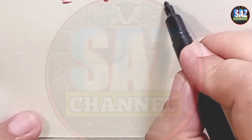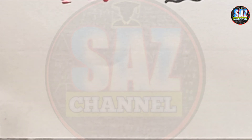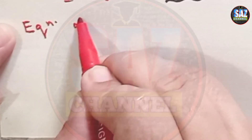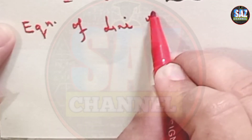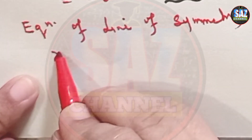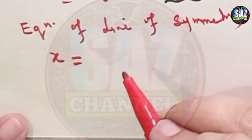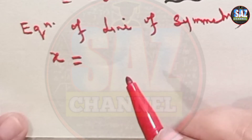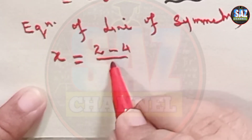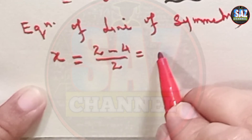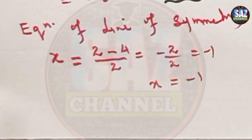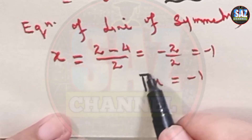Recall the previous lesson — always integrate your lesson with the previous lesson. Now we have to find the equation of the line of symmetry. The line of symmetry is the midpoint of both x-intercepts, or halfway between them. So it is (2 + (−4)) ÷ 2 = −2 ÷ 2 = −1. The equation of the line of symmetry is x equals minus 1.